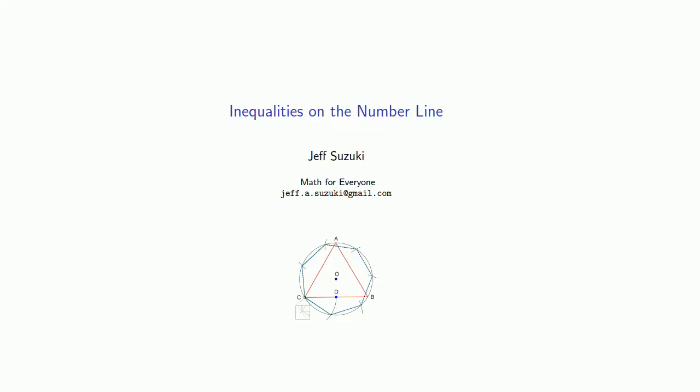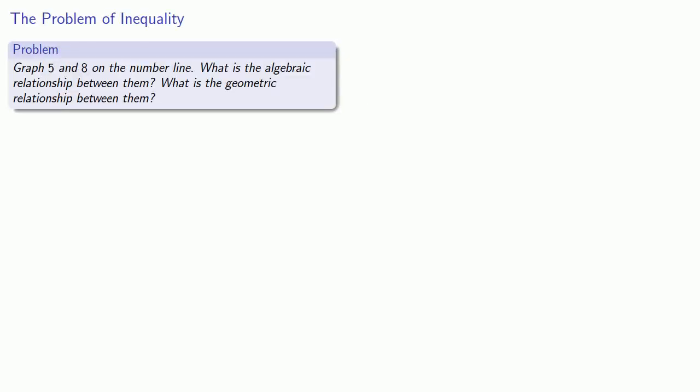We could use the number line as a geometric representation of the algebraic idea of a number. How about for the geometric representation of the algebraic idea of an inequality? Let's pose this as a problem. Let's graph 5 and 8 on the number line and then find the algebraic relationship between them and the geometric relationship between them.